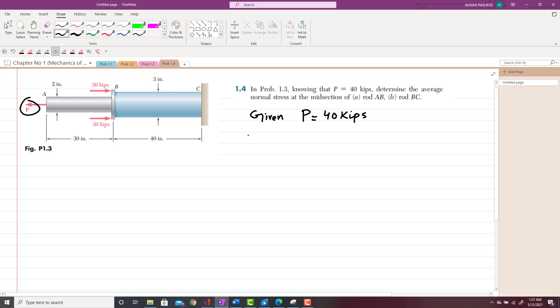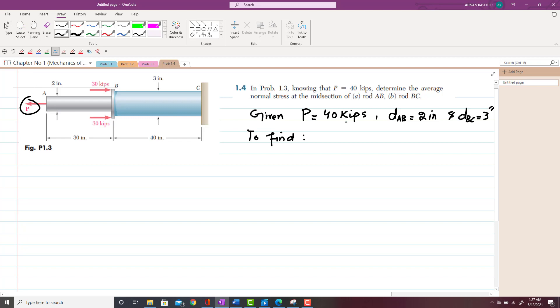And you have to find the diameter of rod. DAB is 2 inches and diameter of rod DBC is equal to 3 inches. Clear?